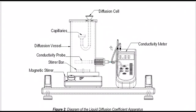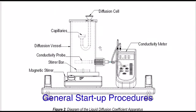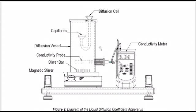In order to start the experiment, we need to complete the general startup first. For the general startup procedures: first, you need to fill the diffusion vessel with approximately 1.2 liters of distilled water, and make sure there is no air trap inside the conductivity probe protector. Then, connect the conductivity connector into the socket on the conductivity meter. Then plug the magnetic stirrer mains cable to the electrical supply, ensuring the voltage is correct for the equipment.